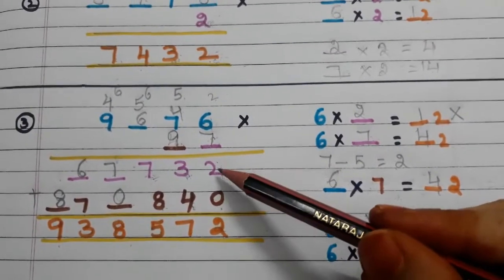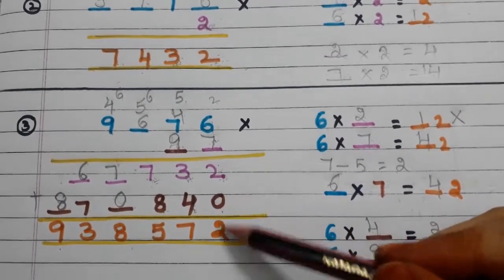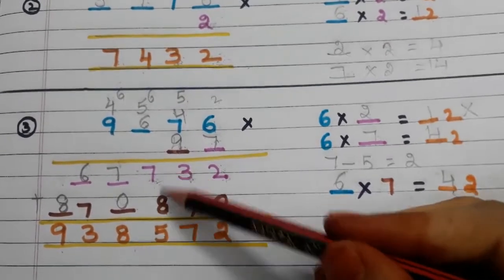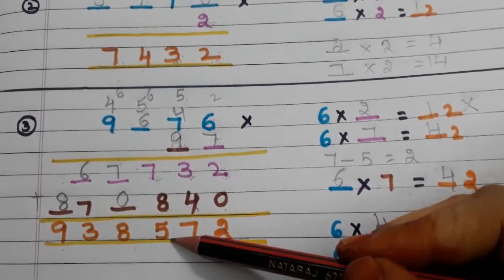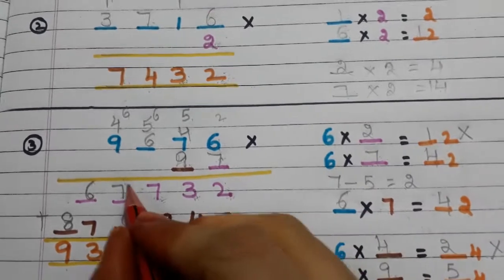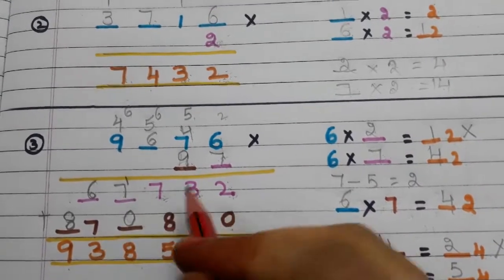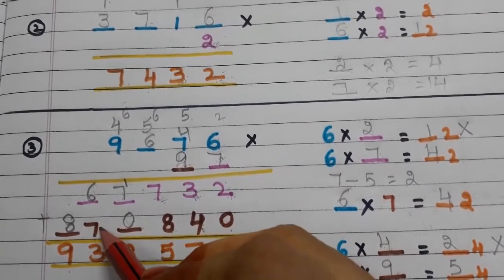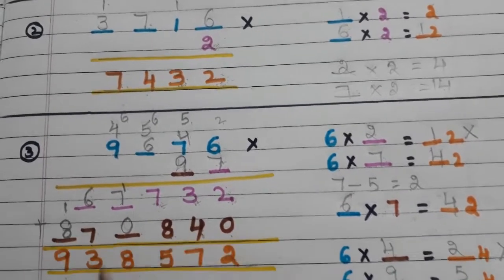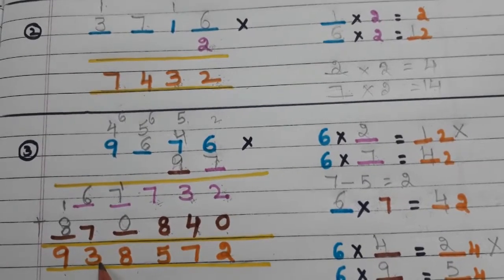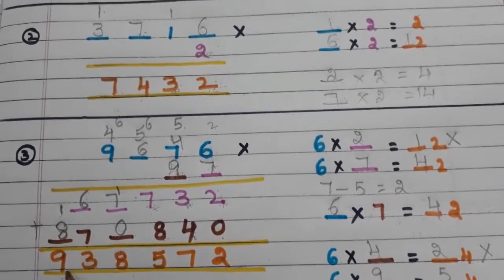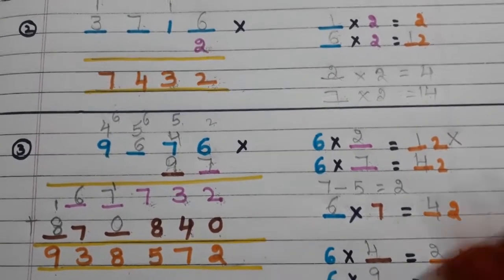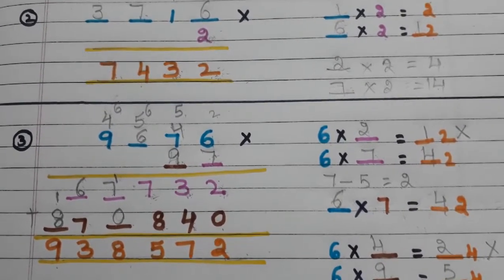Now let us add these two lines: 2 plus 0 is 2; 3 plus 4 is 7; 7 plus 8 is 15, write 5 carry 1; 1 plus 7 is 8; 6 plus 7 is 13, carry 1; 3 is already there; 8 plus 1 is 9. We got the product correctly, so our solution is correct.